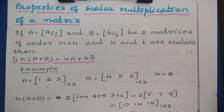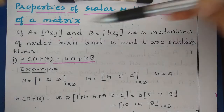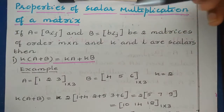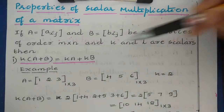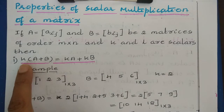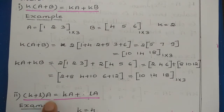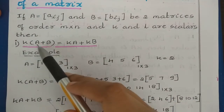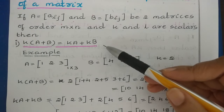Next, with respect to scalar multiplication we have some properties. Let us discuss the properties of scalar multiplication of a matrix. If we have two matrices A (Aij) and B (Bij) of order m cross n, and two scalar values K and L, then we have two properties. First: K into (A plus B) equals KA plus KB. Second: (K plus L) into A equals KA plus LA.